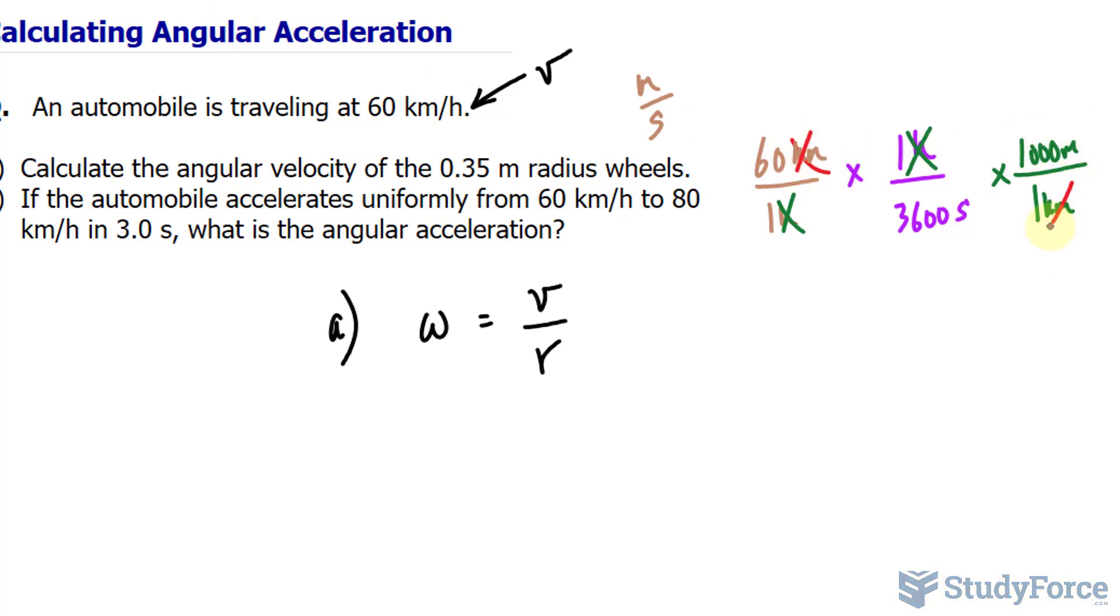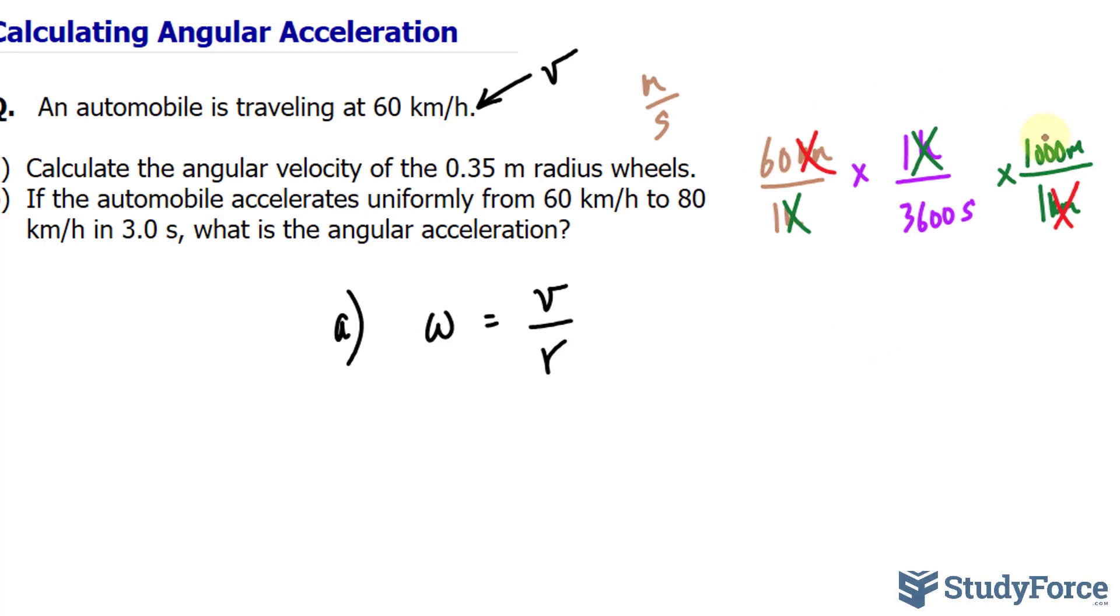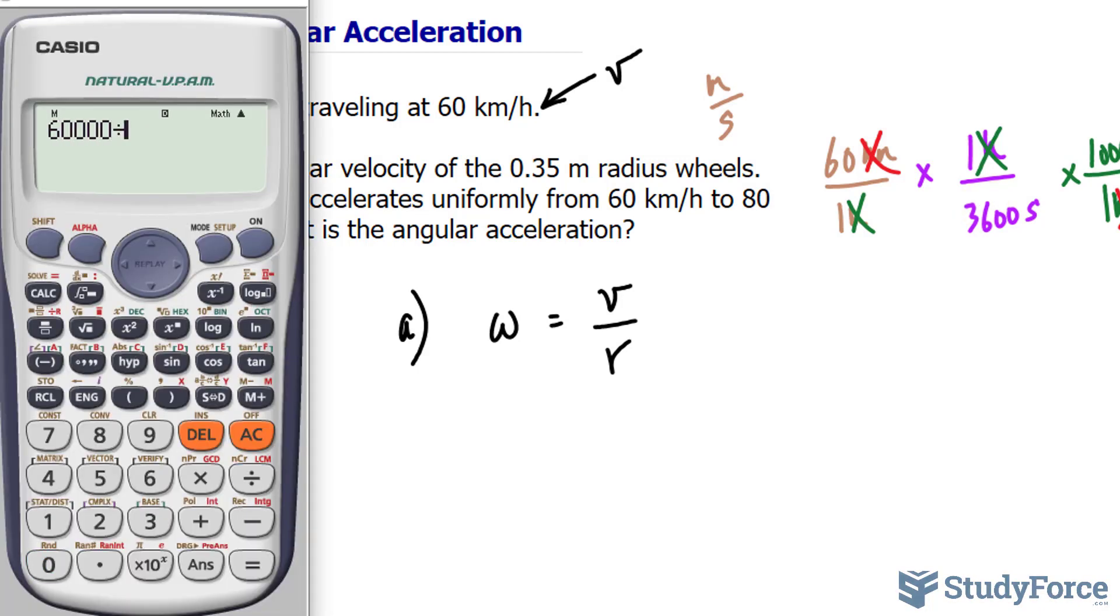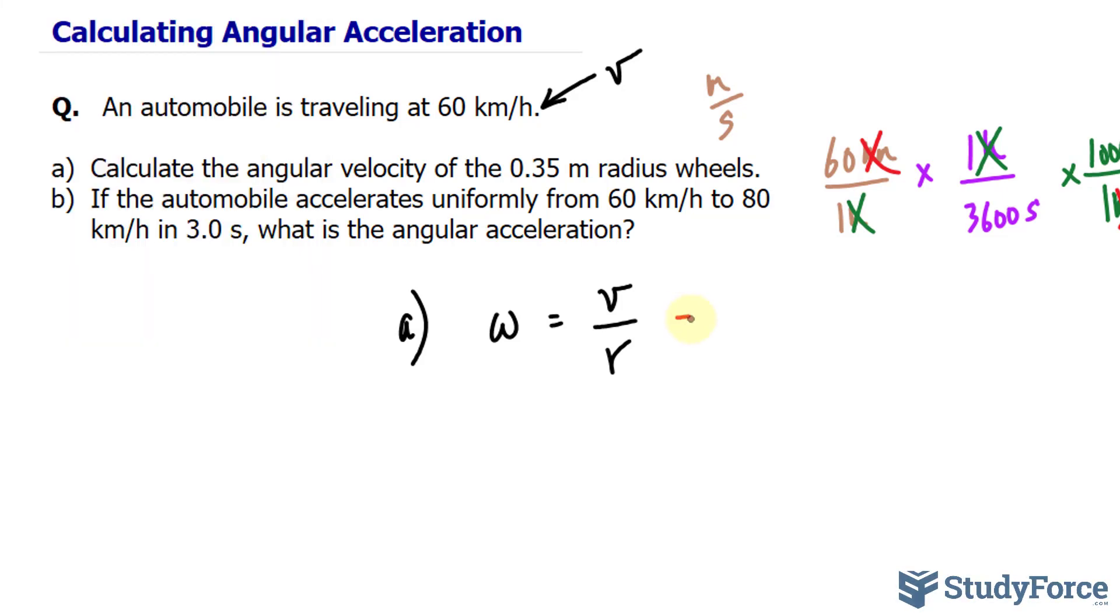So kilometers and kilometers cancel out. 60 times 1,000 is 60,000 divided by 3,600. So 60,000 divided by 3,600 makes 16.6 repeating. 16 and 2 thirds meters per second over the radius of 0.35.